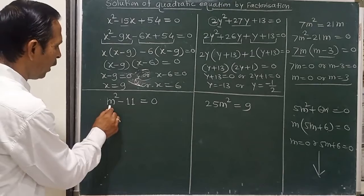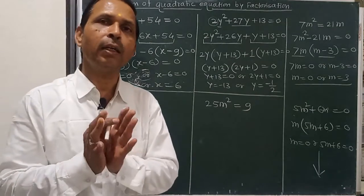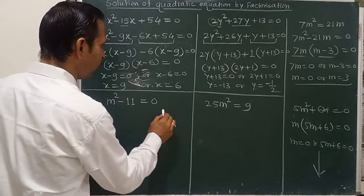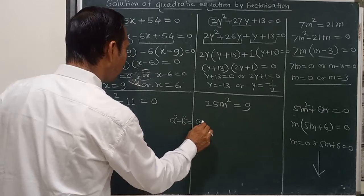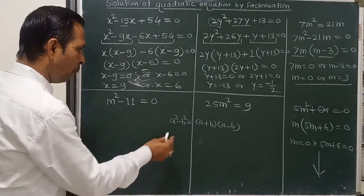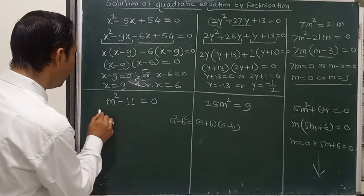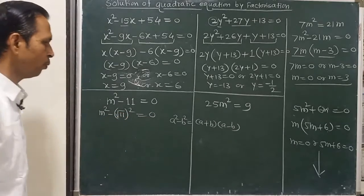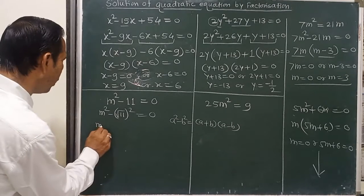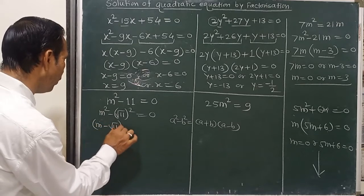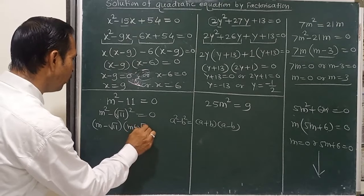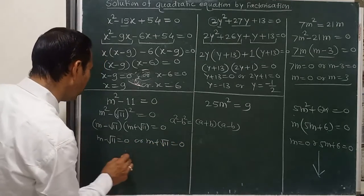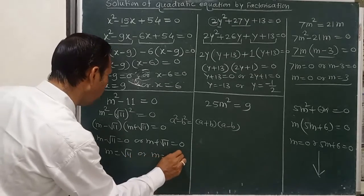Now consider the example m squared minus 11 equals 0. There is no middle term — the middle term is absent. We use the difference of squares pattern: a squared minus b squared equals (a plus b)(a minus b). So m squared minus (root 11) squared equals 0, which factors as (m minus root 11)(m plus root 11) equals 0. Therefore m minus root 11 equals 0 or m plus root 11 equals 0, giving m equals root 11 or m equals minus root 11.